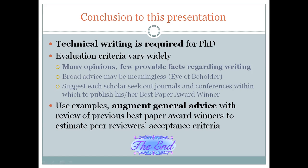In conclusion: number one, technical writing is required for a PhD. Number two, the evaluation criteria for determining which papers get published vary widely — a lot of opinions, very few facts on what actually constitutes publishable work. In this presentation I have shown that you can use landmark papers and best paper award winners to determine whether your paper compares favorably to peer reviewers' acceptance criteria. I do not submit this as evidence — I simply submit it as a suggestion. I hope it has been useful for you.